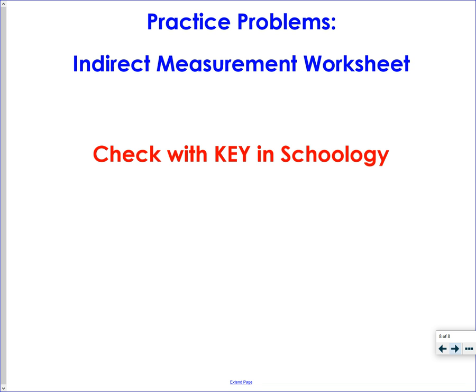So your worksheet today is the indirect measurement. It says practice B on it. You're going to be writing these proportions. Some of them give you pictures. Some of them don't. But it's always a height and a shadow. Height and a shadow for both of them. There will be no learning check today. Just check your work with the answer key in Schoology and let me know if you have any questions.